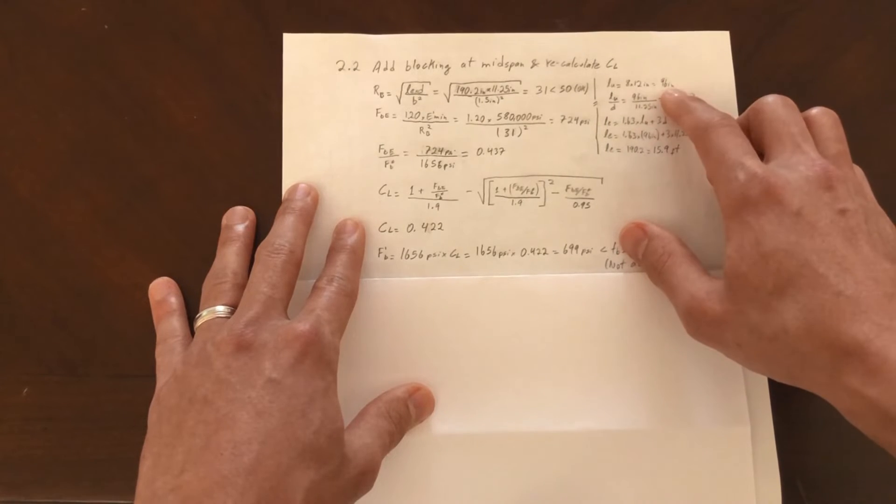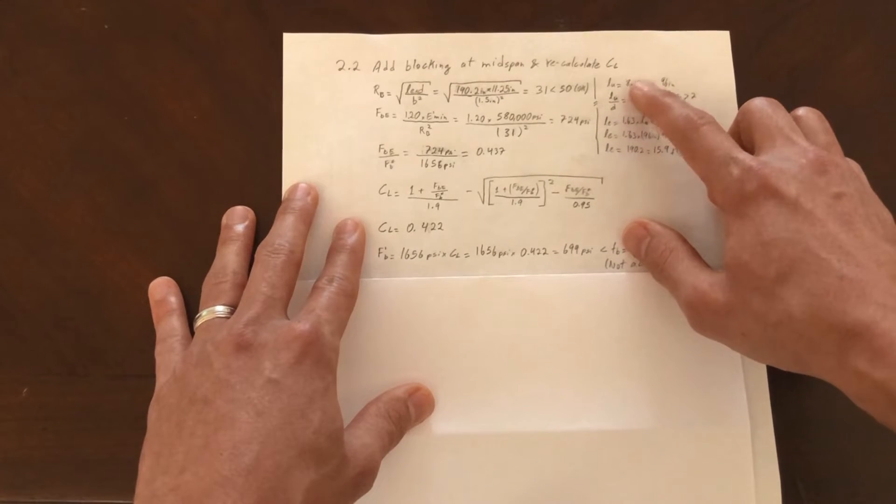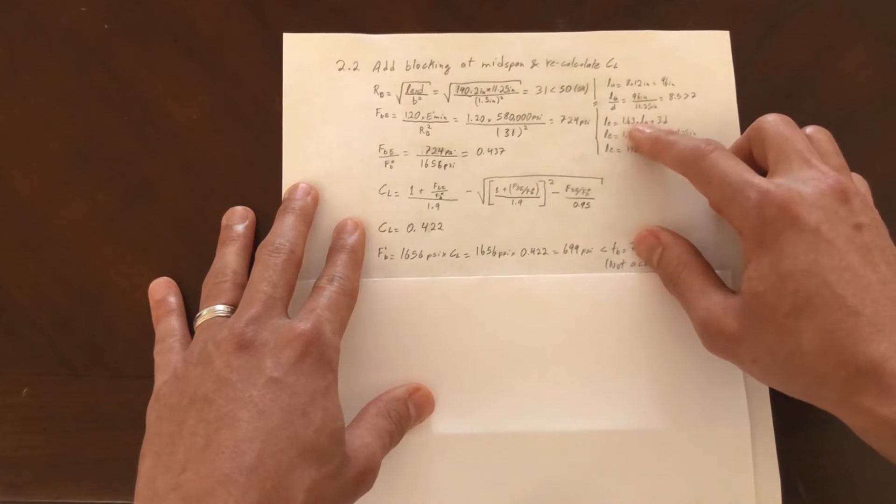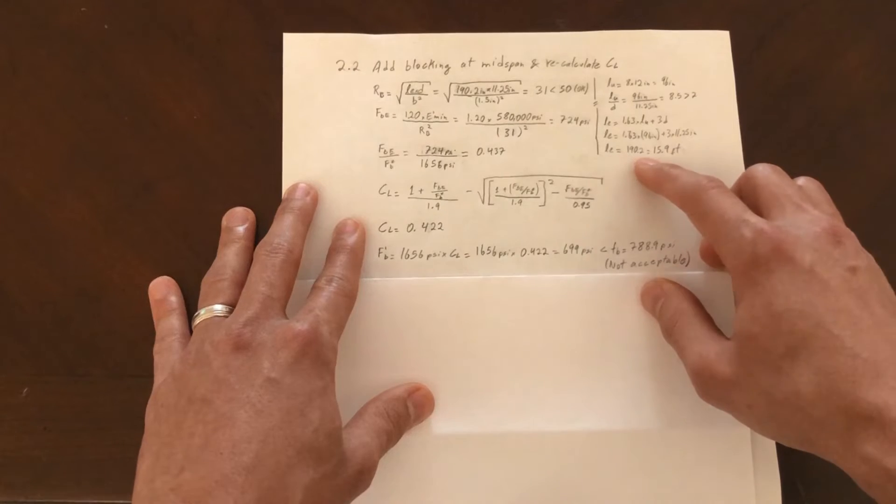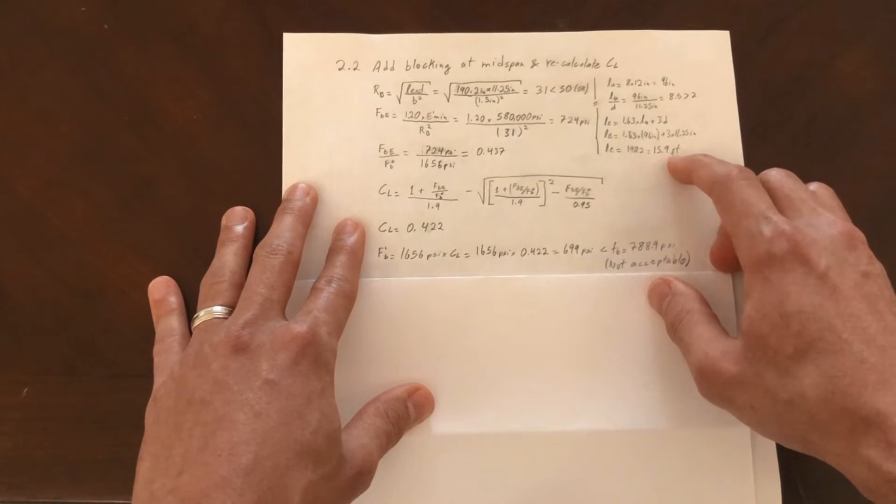The only thing I'll go over is what's different here. This LU over D - my unbraced length is 8 times 12, 96 inches, because it's half of the span, which is 16 feet. Then it's greater than seven, so we use that same formula and we get the effective length now as 15.9 feet.